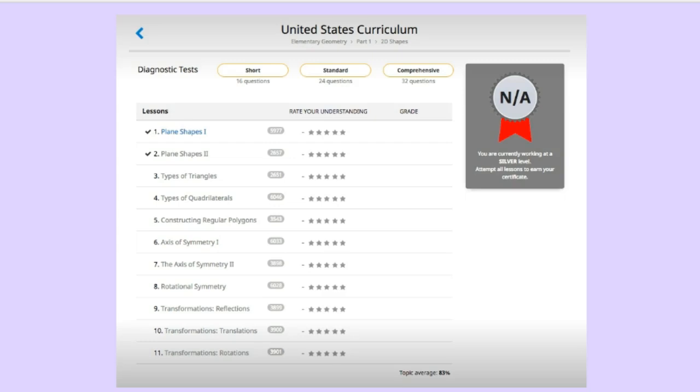The ribbon on the right of your screen gives your student an idea of how he or she is doing up to this point. They have bronze, silver, gold and platinum which is motivating to some students. You can even print out certificates at the end of each section with those ribbons for your student.